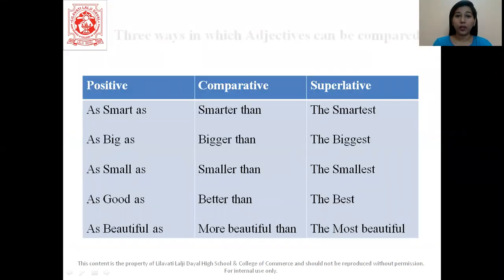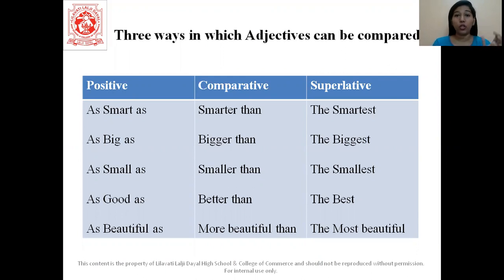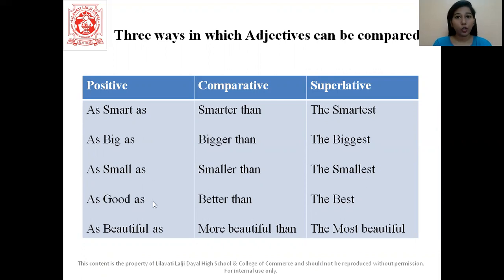So let us see how we compare. There are three ways in which adjectives can be compared: positive, comparative, and superlative. In the positive degree, always remember students, we will use the word 'as', then our adjective, and then again the word 'as'. For example: as smart as, as big as, as small as, as good as, as beautiful as.